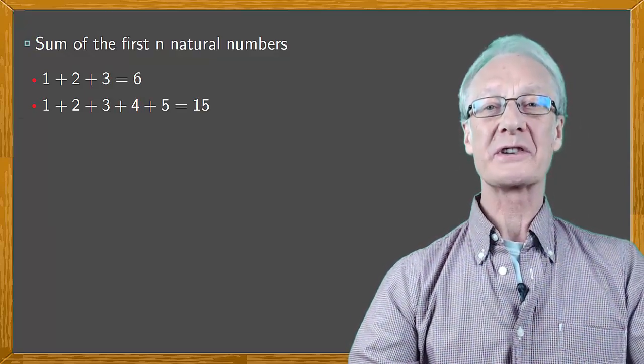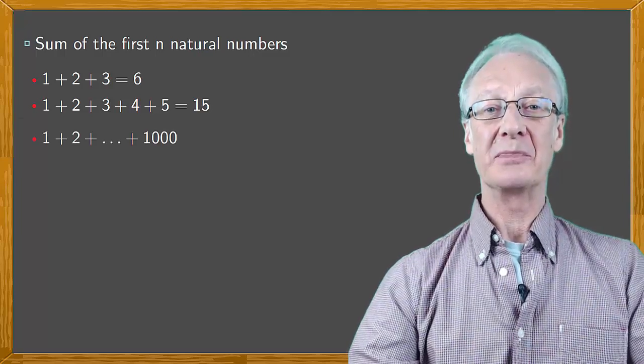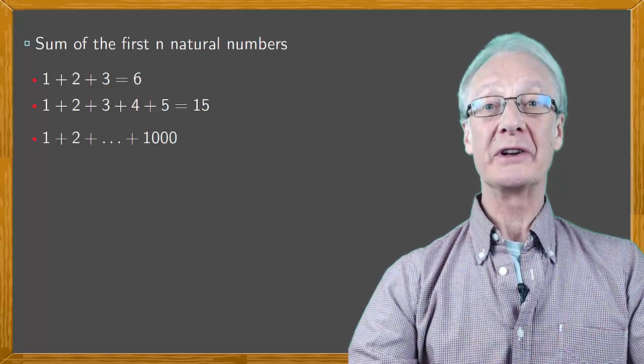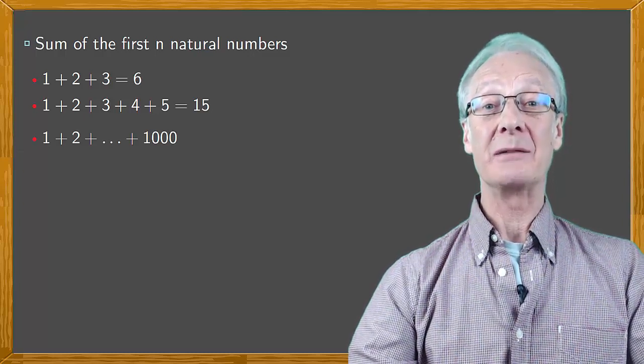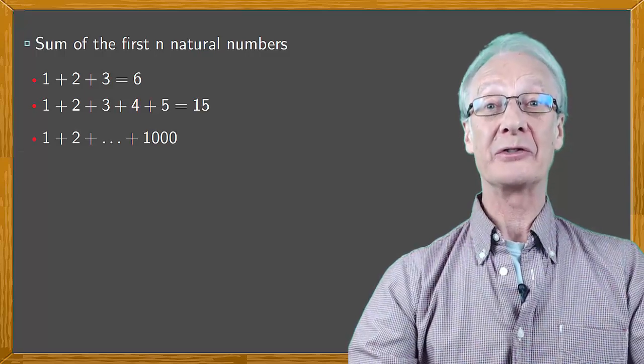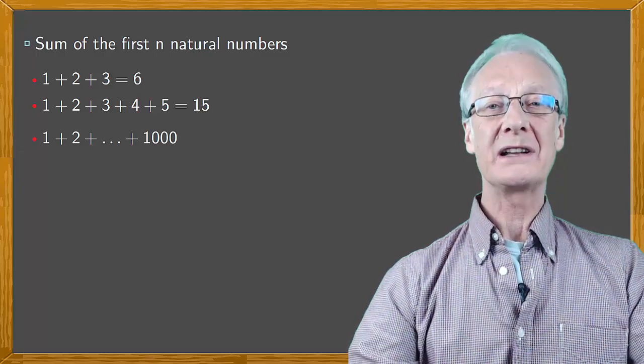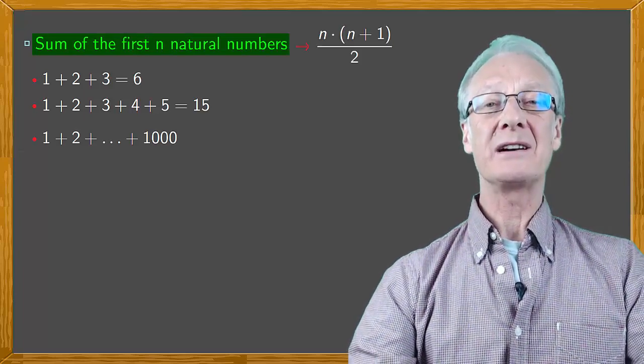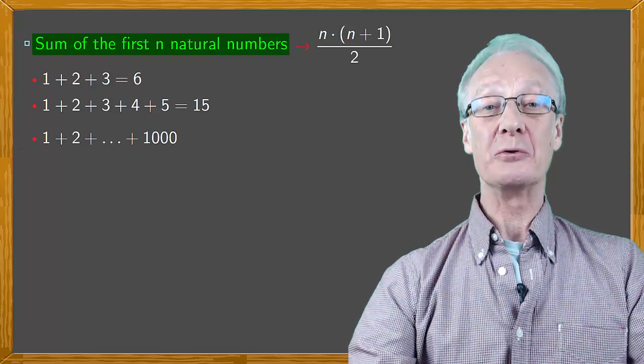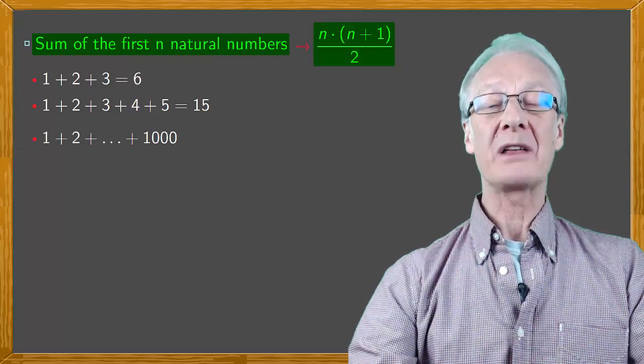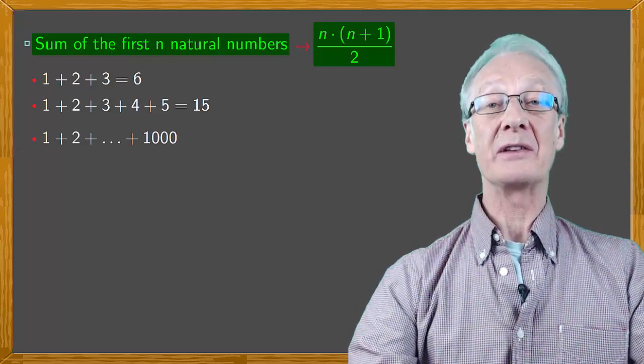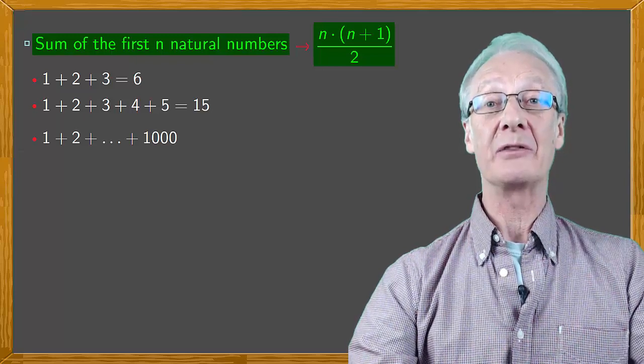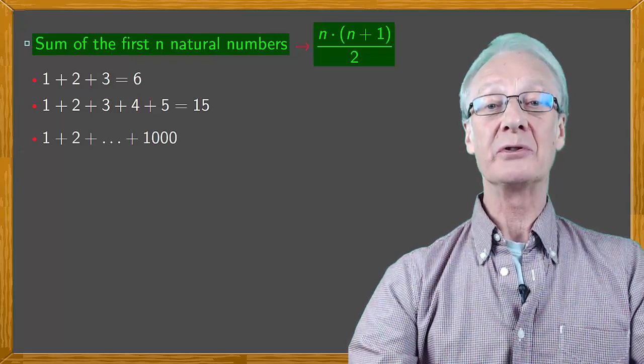What if I now ask you what's the sum of the first 1,000 natural numbers? Although you again understand the problem, you also know that it's going to take a very long time to add every number from 1 to 1,000 in succession. But what if I tell you that the sum of the first n natural numbers is equal to n times n plus 1 divided by 2? The German mathematician Carl Gauss found this method as a child, and you can obtain it from the formula for the sum of the terms of an arithmetic progression, and you can prove it by induction.